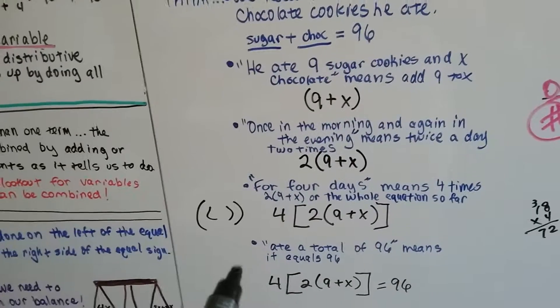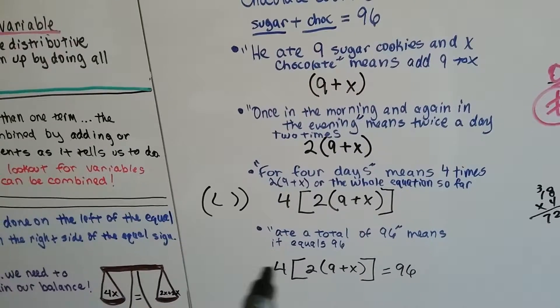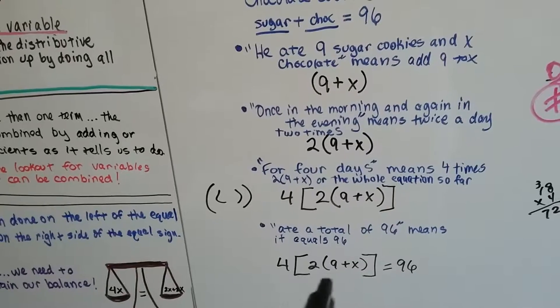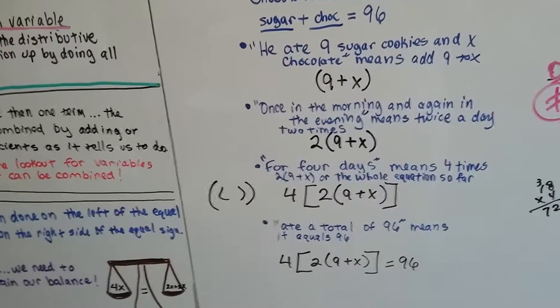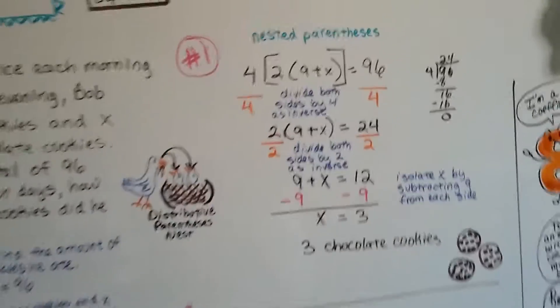He ate a total of 96 means it equals 96. So now we have our equation: 4 times 2 times 9 plus X equals 96. Let's solve this. I'm going to show you two ways.